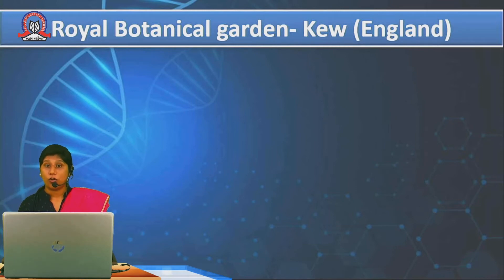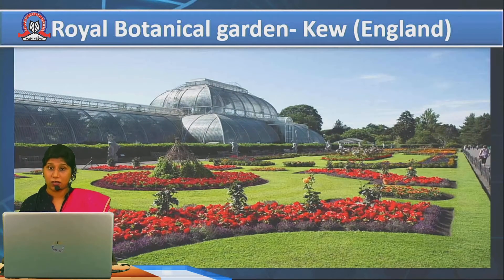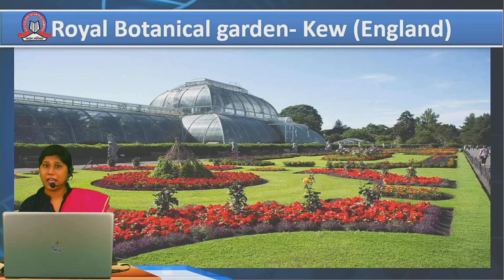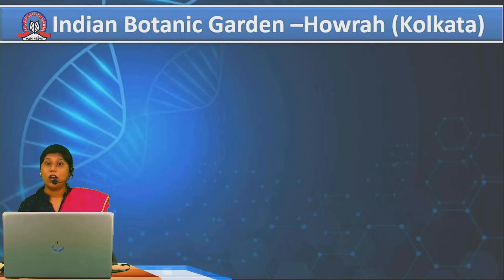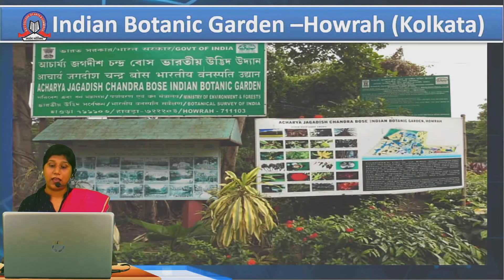Now, talking about botanical gardens — the world's largest botanical garden is the Royal Botanical Garden, which is present in England at the place of Kew. You can see the picture — this is the world's largest botanical garden. India's largest botanical garden is the Indian Botanic Garden, present in Howrah, Kolkata. You can see the picture of that — this is the Indian Botanic Garden, which is India's largest botanical garden.